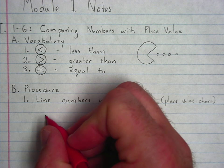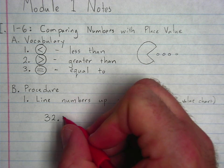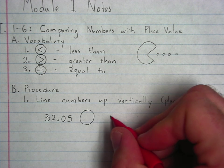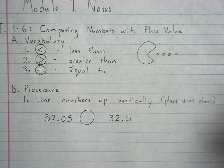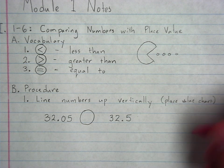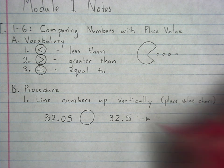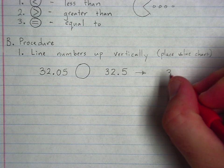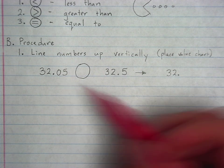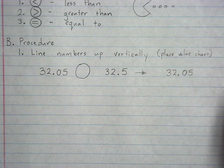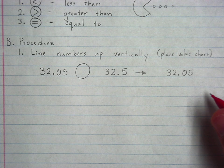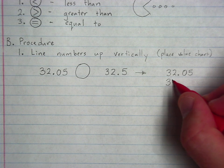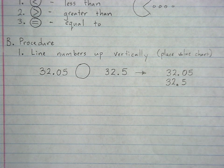So, for example, if I am going to be comparing 32.05 to 32.5, my first step is going to be to take the numbers and write them vertically. Basically, write them one on top of the other. It doesn't really matter what you start with. I usually put this one on top, but it doesn't really matter. What does matter is that you line up the decimal points. This is going to be super important when we add and subtract decimals later. You may as well get in the habit now. Line up those decimal points.